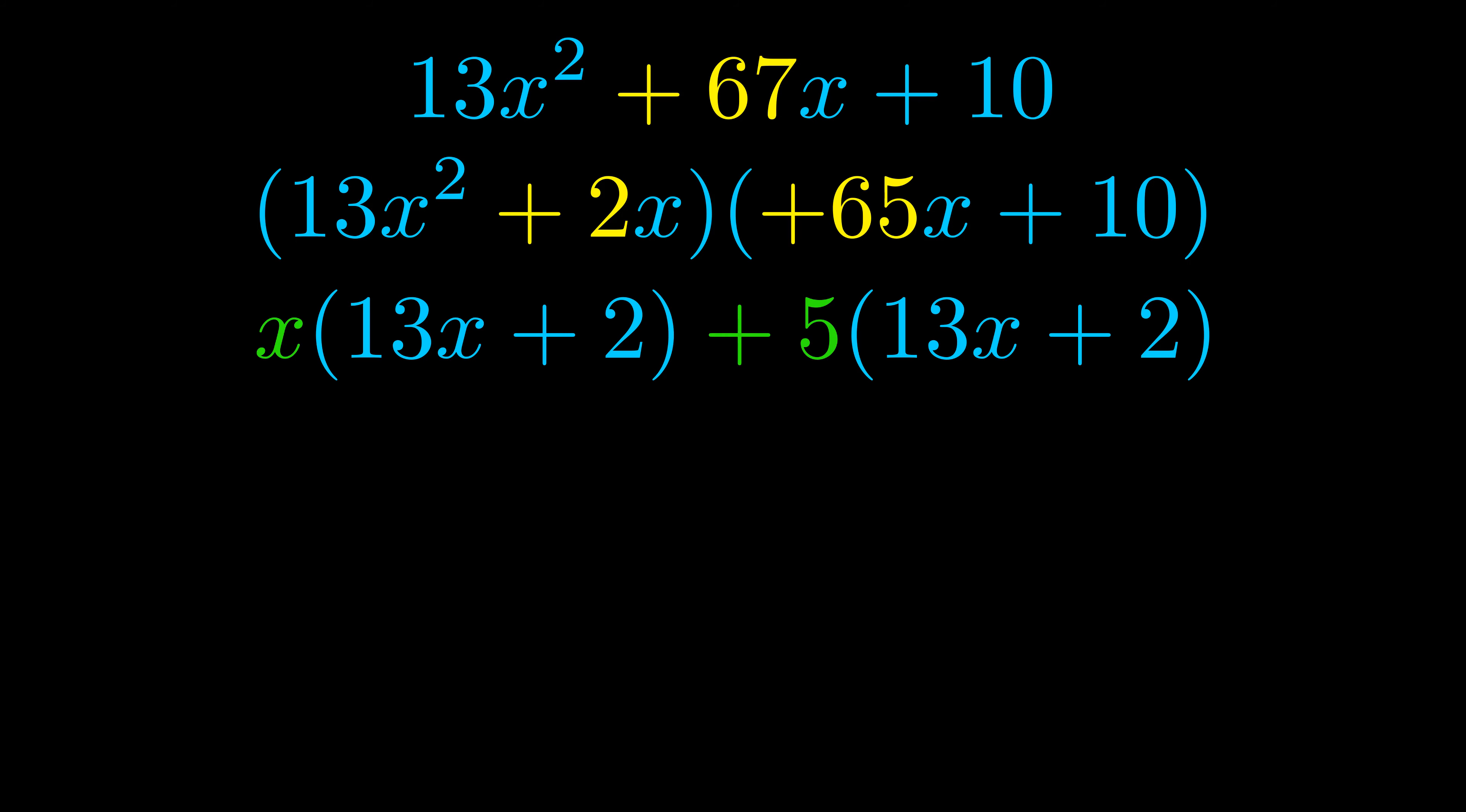Notice also how what remains inside of the parentheses is the same in both cases. The blue values are the same. Those blue values will become one of our factors, and we will combine the two green values, the GCFs that we pulled out, to get the other one. And that is our fully factored equation.